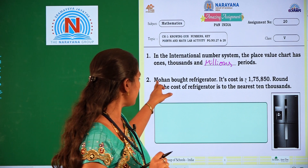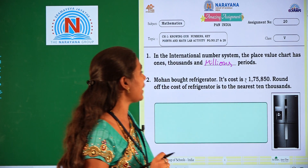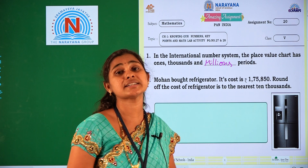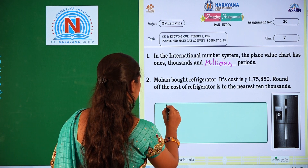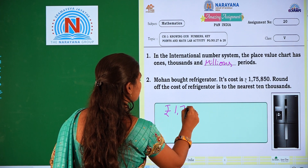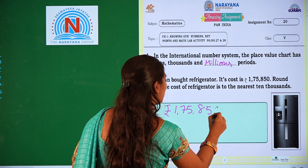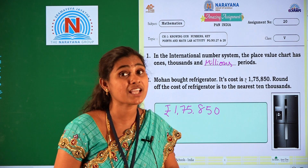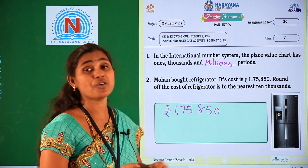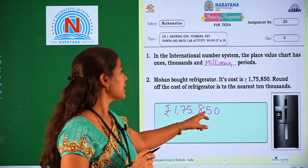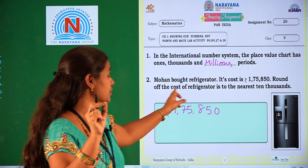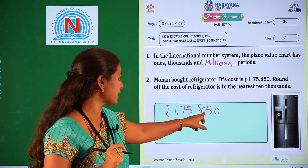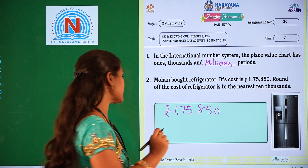We will go for the second question. Mohan bought a refrigerator. Its cost is 1,75,850 rupees. Round off the cost of the refrigerator to the nearest 10,000. We have to round off the number to the nearest 10,000. How to do round off numbers? We should underline the 10,000 digit. Ones, tens, hundreds, thousands — the 10,000 digit is 7.